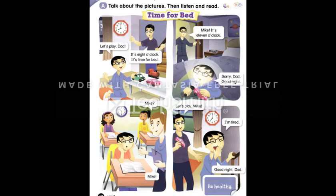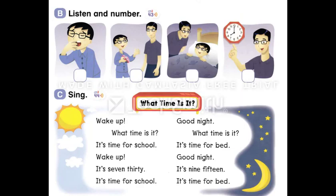Mike? Mike? Let's play, Mike. I'm tired. Good night, Dad. Page 63, Section B — Listen and number. 1. Let's play, Dad. 2. It's time for bed. 3. Good night. 4. I'm tired.